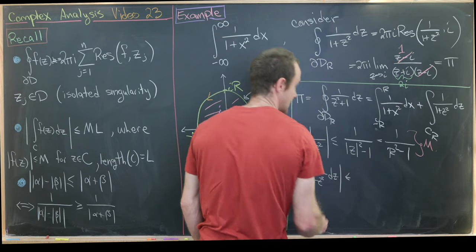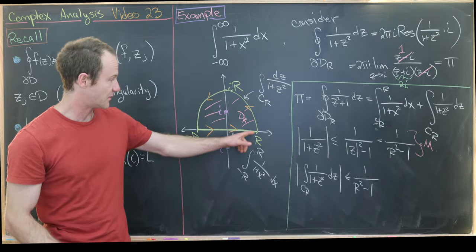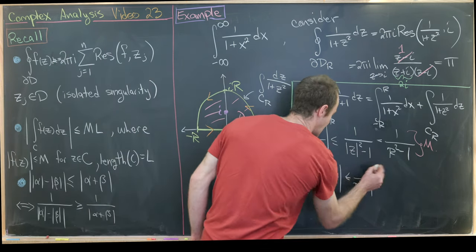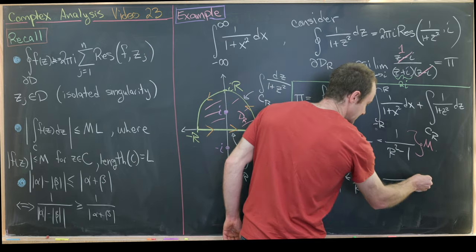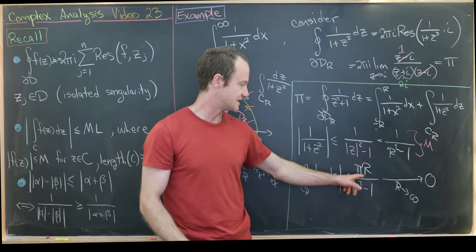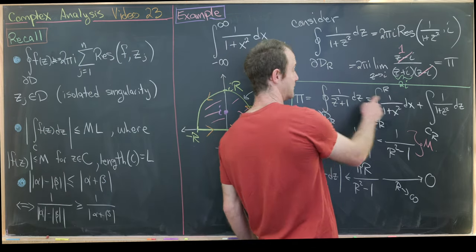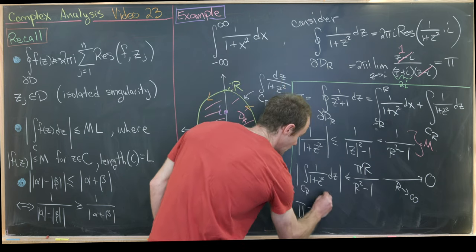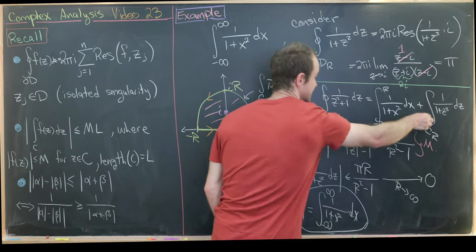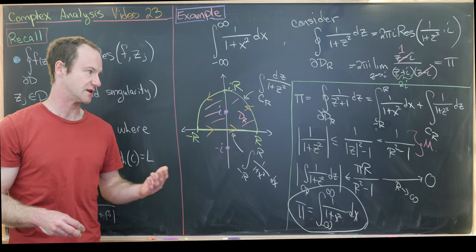So the modulus of the integral over C_R of 1 over (1 + z²) dz is less than or equal to 1 over (R² − 1) times the length of the curve. That's a semicircle of radius R, so it has length πR. Applying the limit as R → ∞, this goes to zero because the degree of the denominator is larger than the degree of the numerator. Putting this all together: π equals the integral from −∞ to ∞ of 1 over (1 + x²) dx.